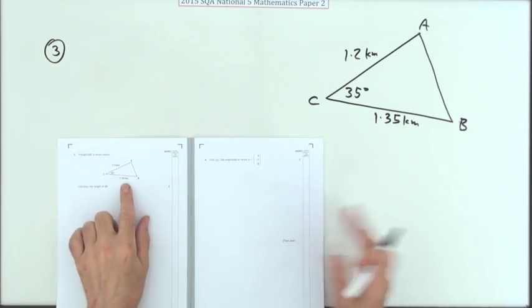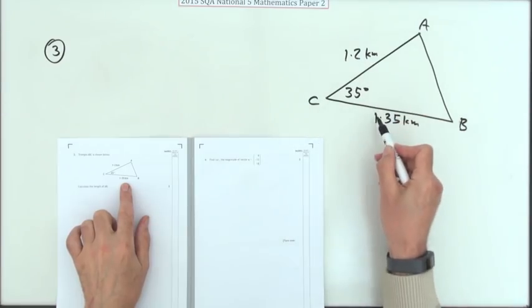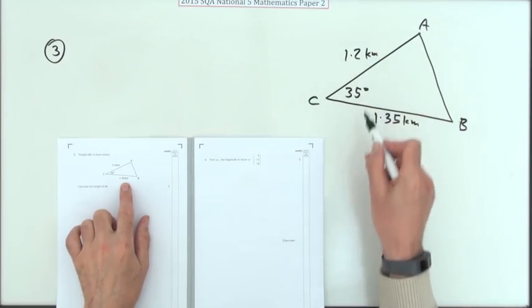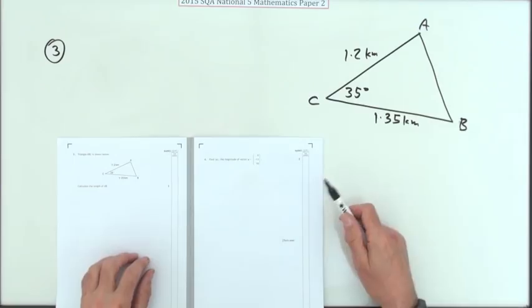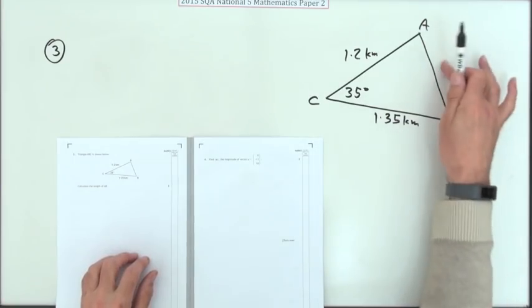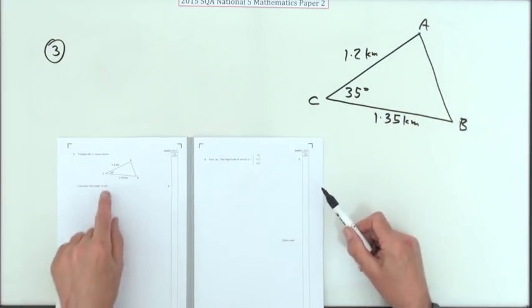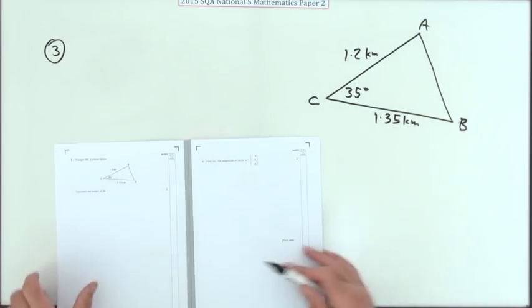Number three then, what have we got? There's a triangle, there's two sides given and the angle that's between them. Two sides and the included angle there, that's a cosine rule. This will say work out the length of that side or work out the area of the triangle. Let's work out the length of that side AB for three marks.